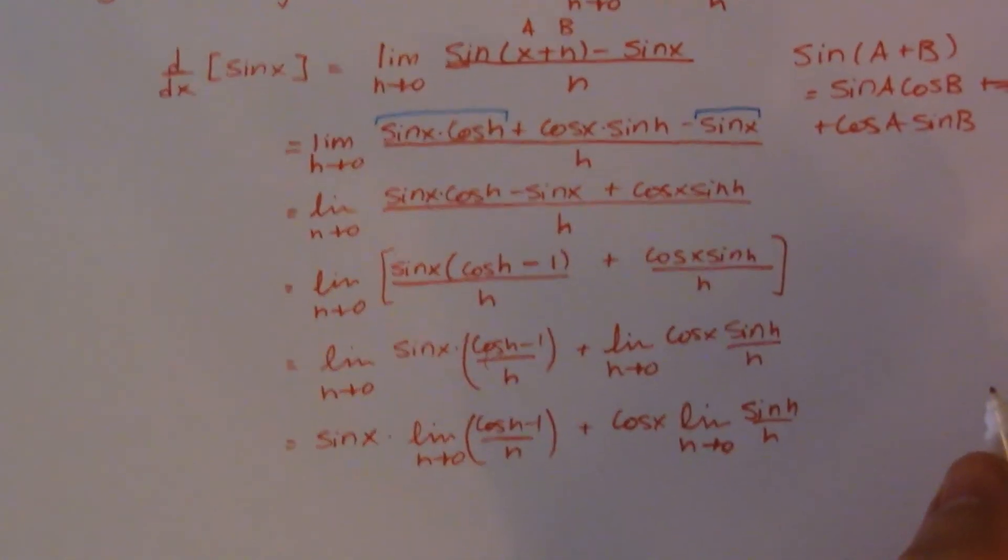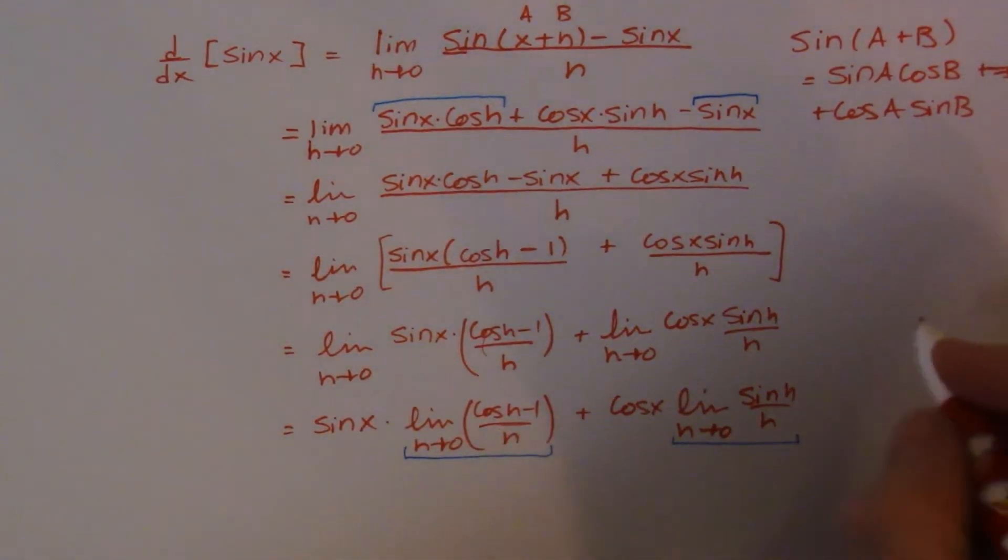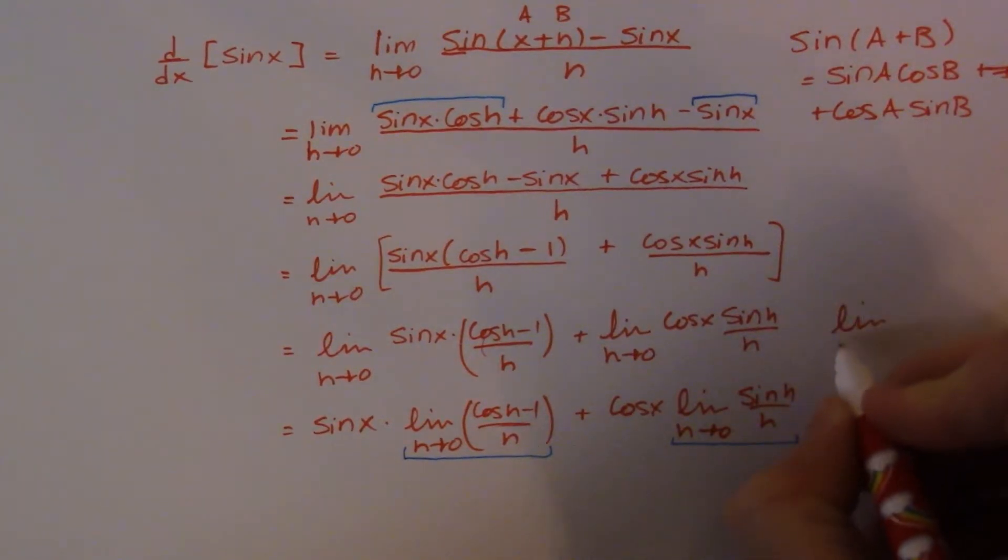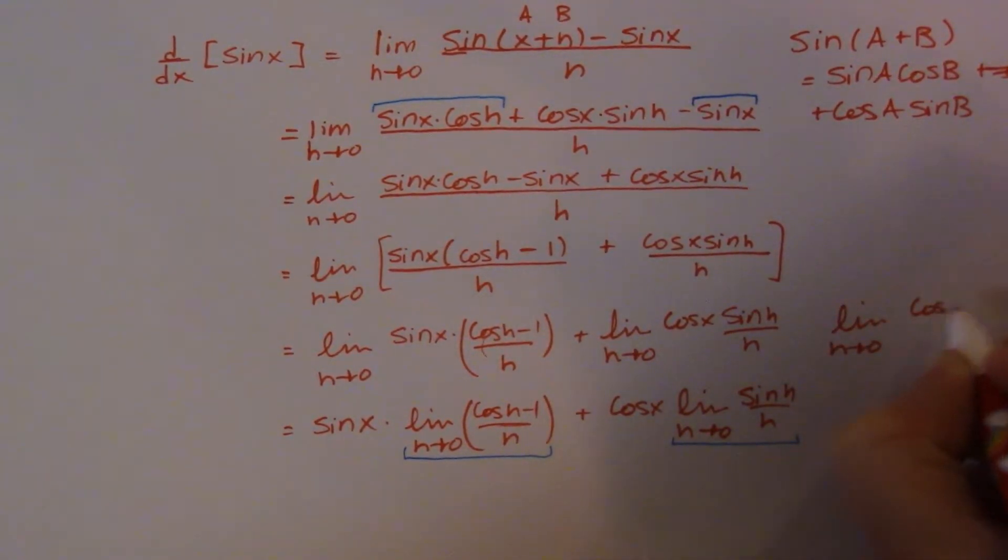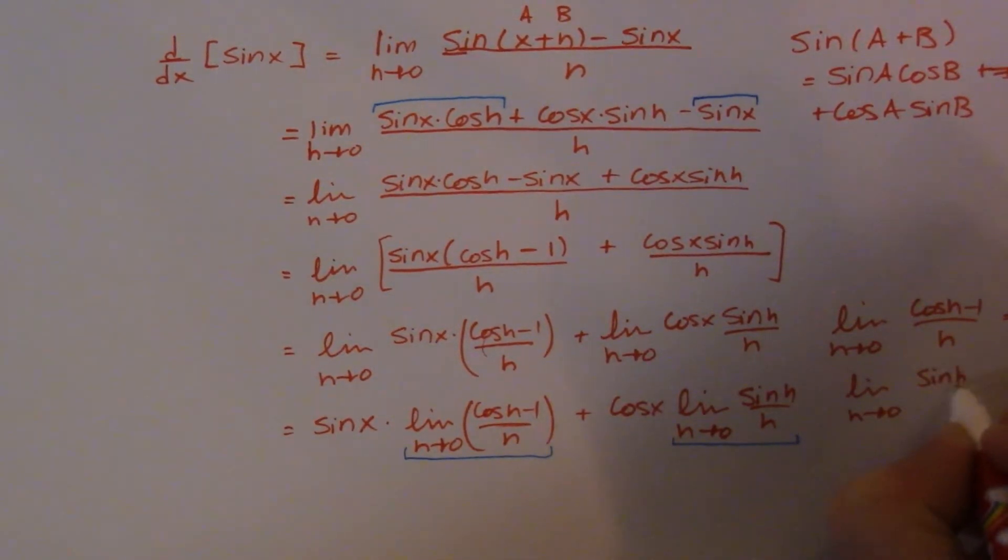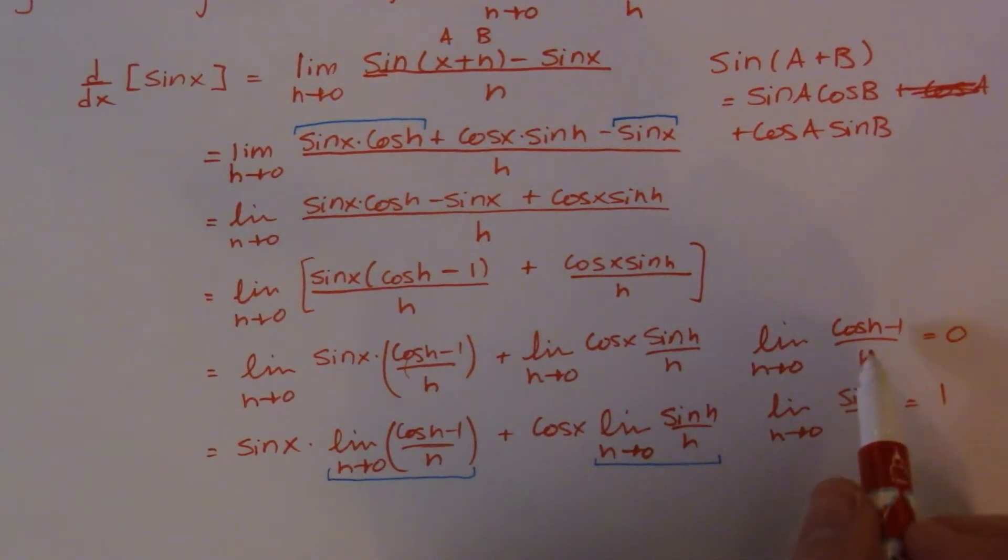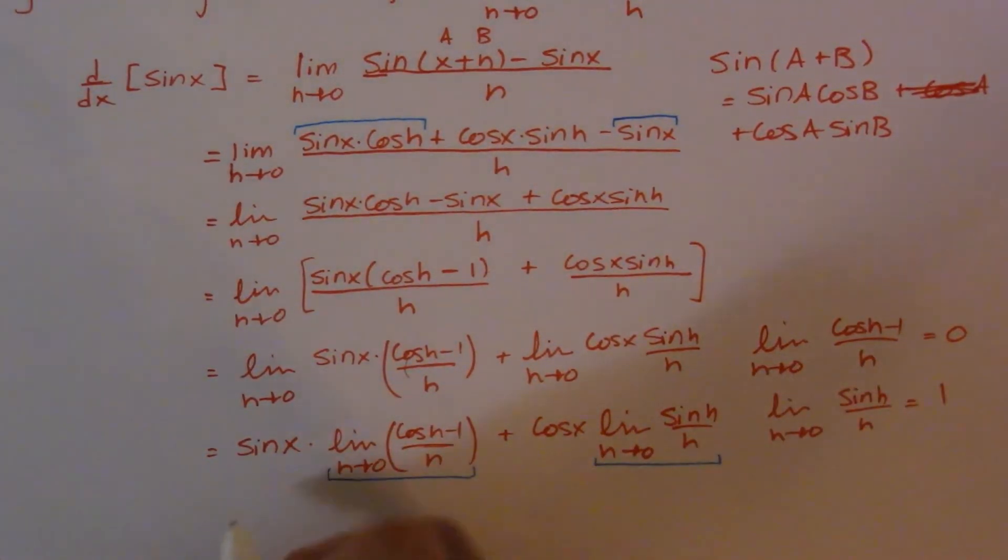These two limits have special values. You've probably, hopefully, done some trig limits somewhere along the way, and these are two known limits. The limit as h goes to 0 for cos of h minus 1 all over h, that's equal to 0, and the limit as h goes to 0 of sine h over h is equal to 1. If you're looking for proofs of these things, you're going to have to look somewhere else. This video doesn't have it, but for a proof like this, these are things that we know, so we can accept them as they are and use them in our proof.